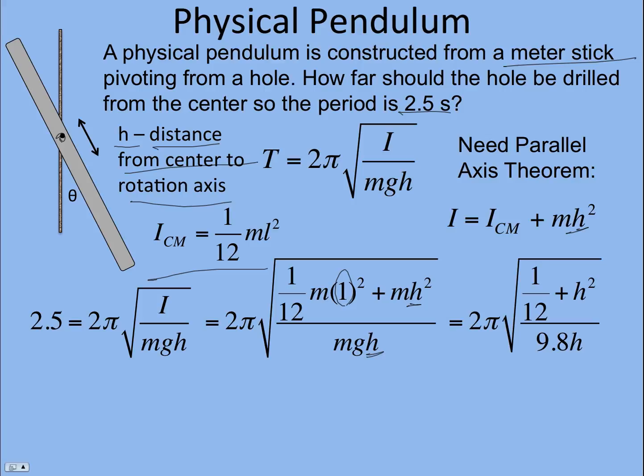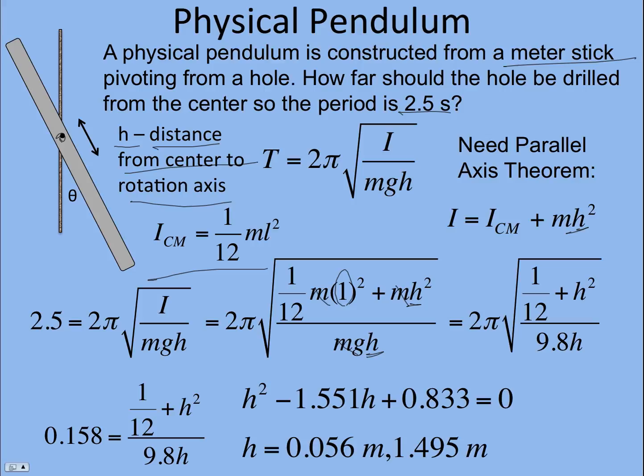And so that's the h in the parallel axis theorem and the h in the denominator of the period equation. And so we simplify, the mass goes away, and we put L equal 1. It's not always 1, so just be careful with that. And if we multiply that out, I divided both sides by 2π and squared both sides.